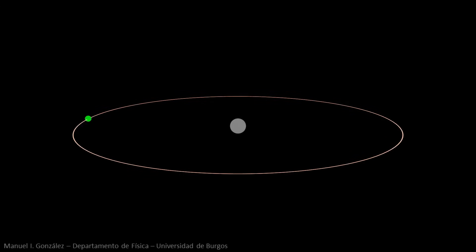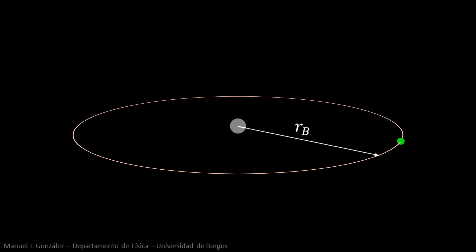This is a semi-classical picture of the simplest atom, hydrogen. An electron describes a circular orbit around the proton. In the lowest energy state, the radius of the orbit is the so-called Bohr radius.